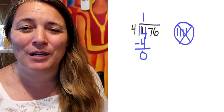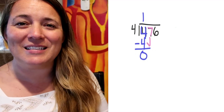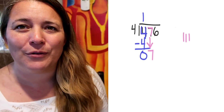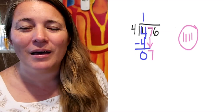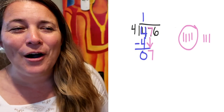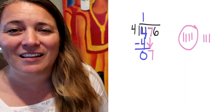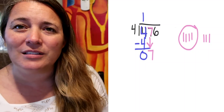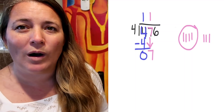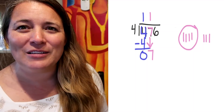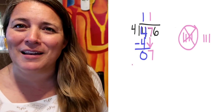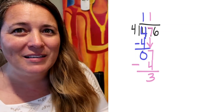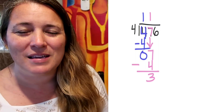Next, we bring the 7 down — so we have 7 pieces showing. We draw them out: 1, 2, 3, 4 — stop, make a group. 5, 6, 7. I can see exactly 1 group with 3 left over. So on top I put 1, showing we've used 1 group of 4. We take away that 4: 7 minus 4 is 3 — exactly as my picture shows, 3 pieces left.